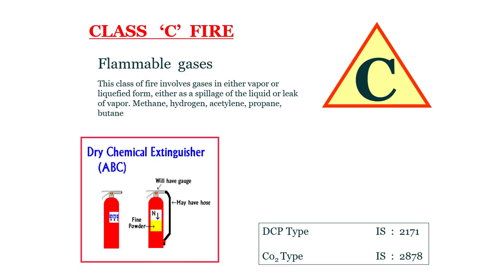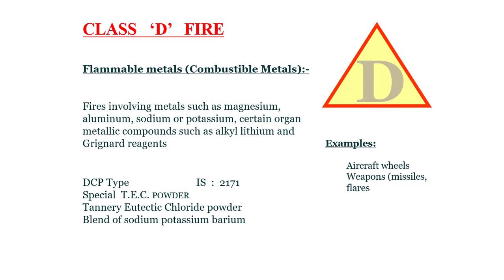Class C fire — flammable gases: this class involves gases in either vapor or liquefied form, such as methane, hydrogen, acetylene, propane, and butane. DCP type IS 2171 and CO2 type IS 2878 are recommended to extinguish this fire. Class D fire — flammable metals: combustible metals such as magnesium, aluminium, sodium, potassium, and certain organometallic components such as alkyl-lithium and Grignard reagents. Examples include aircraft wheels. DCP type IS 2171 and special DCP powder are used.